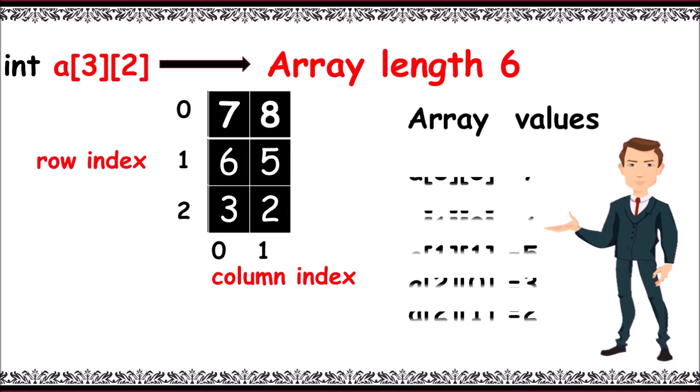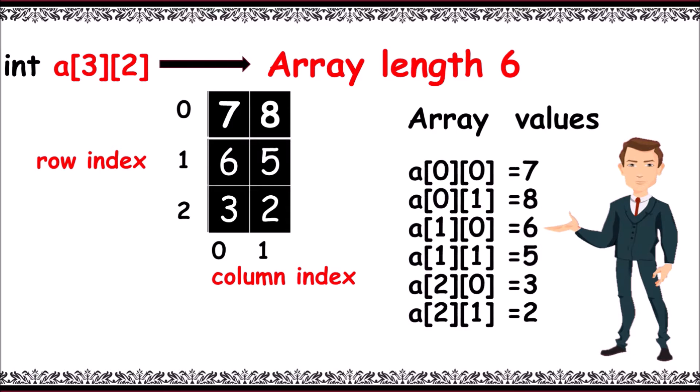Now, the array values be like a[0][0] is equal to 7, a[0][1] is equal to 8, a[1][0] is equal to 6, a[1][1] is equal to 5, a[2][0] is equal to 3, a[2][1] is equal to 2.